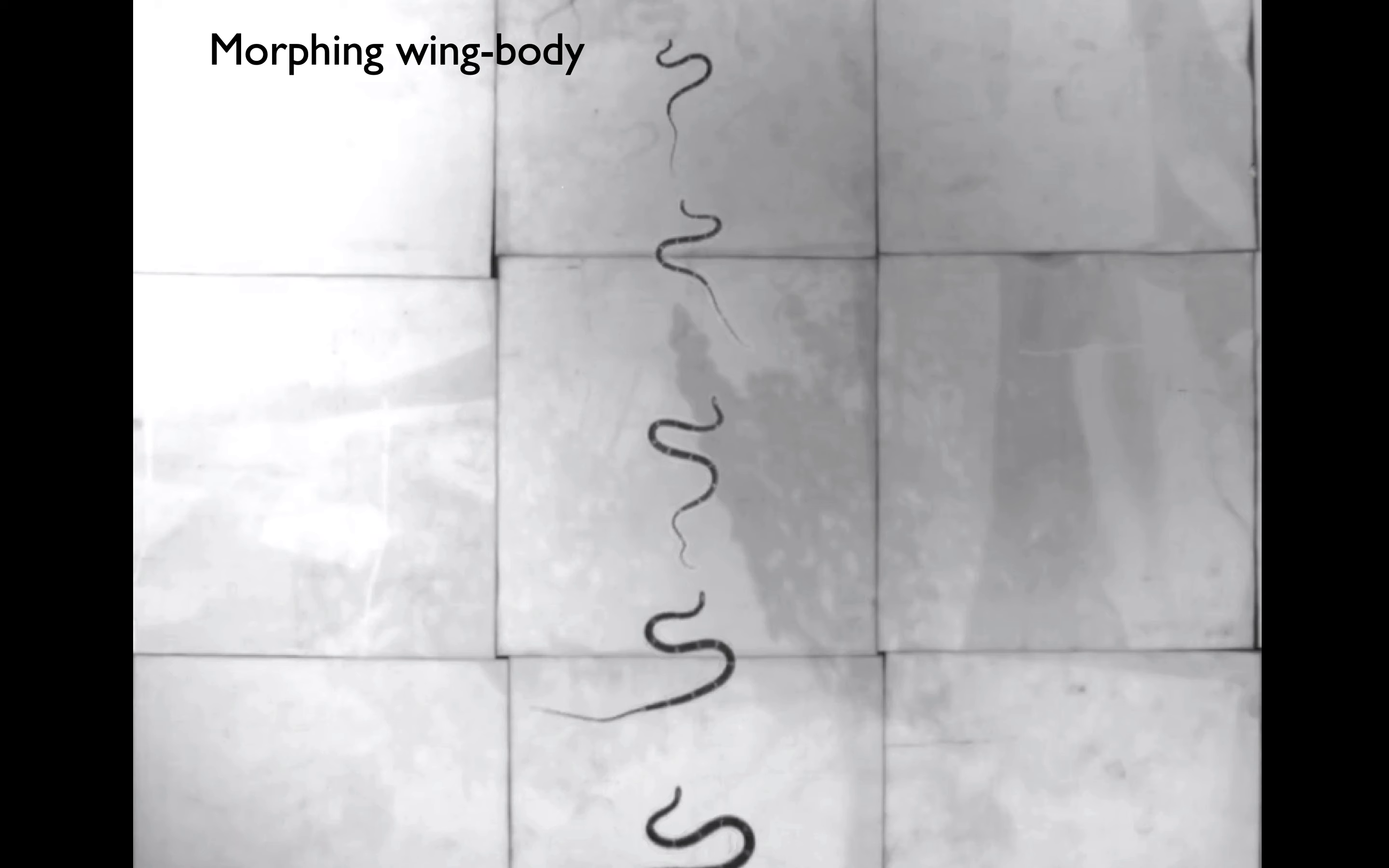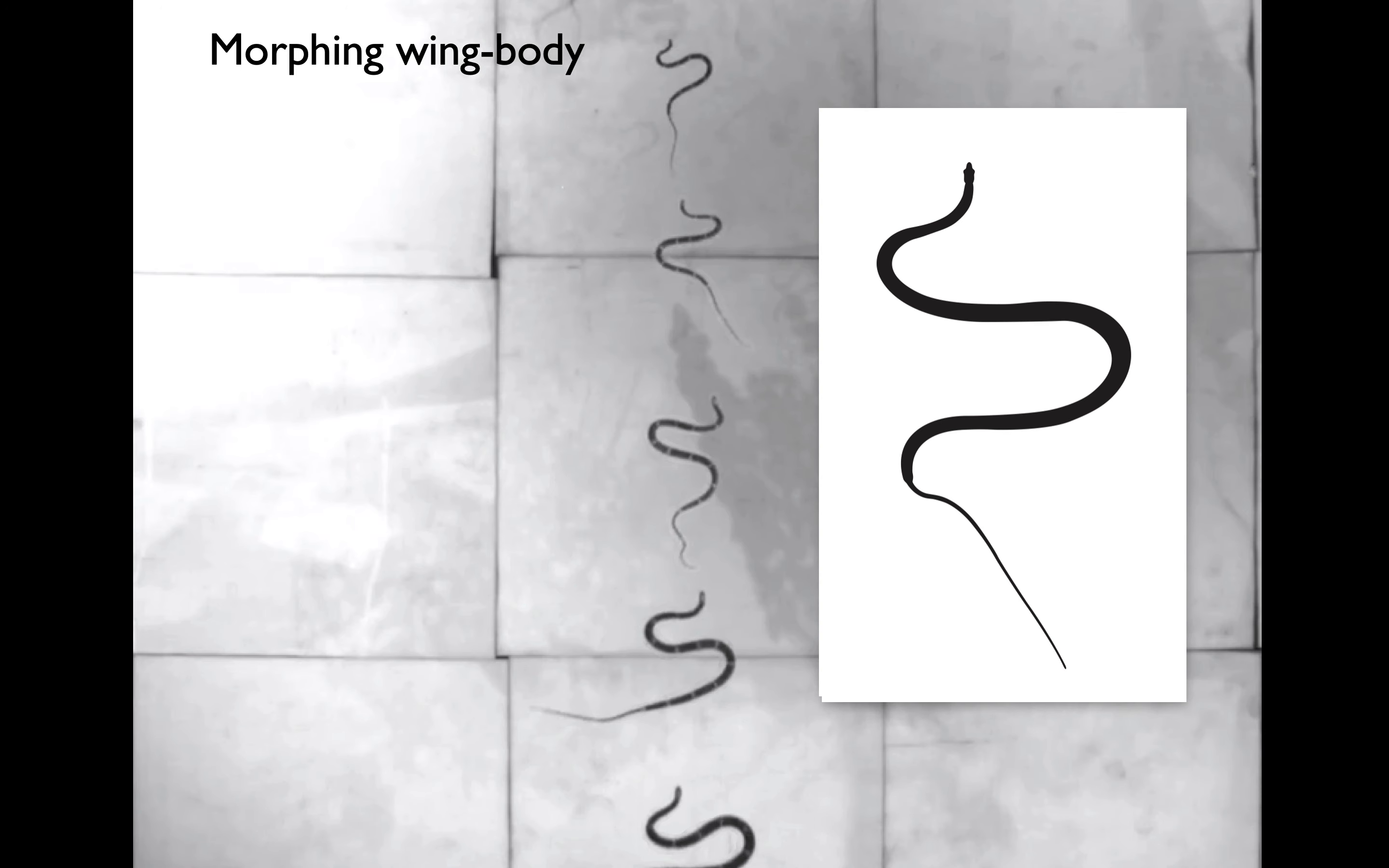In effect, the snake is turning its whole body into a morphing wing. At each moment in time, we see consistent features of the wing body. These include long, straight segments which are nominally perpendicular to the flow. These segments are connected by tight U-bends.